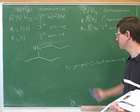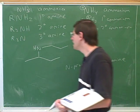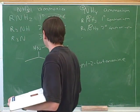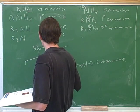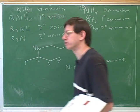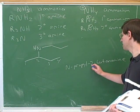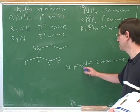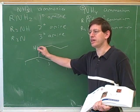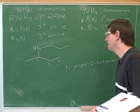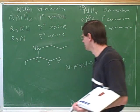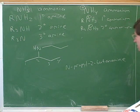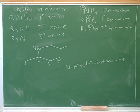We don't want to forget this locator. It would definitely help here to number the parent chain to help us see what we're doing. The amine is on the number two carbon and then the propyl is on the nitrogen. Why is this the parent chain? Because it's the longer one. N-propyl-2-butanamine.